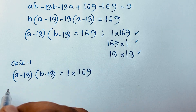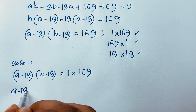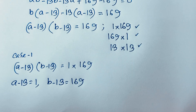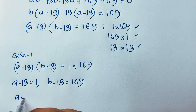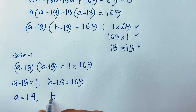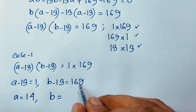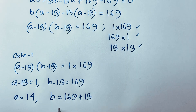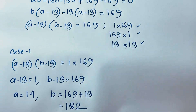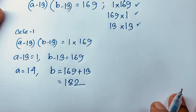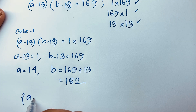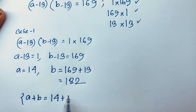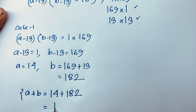So you can see here, A minus 13 is equal to 1, and B minus 13 is equal to 169. Now A is equal to 1 plus 13, which is 14, and B is equal to 169 plus 13, which is 182. Our question asks A plus B, so A plus B equals 14 plus 182, which is 196. So we find our first case answer: A plus B is equal to 196.